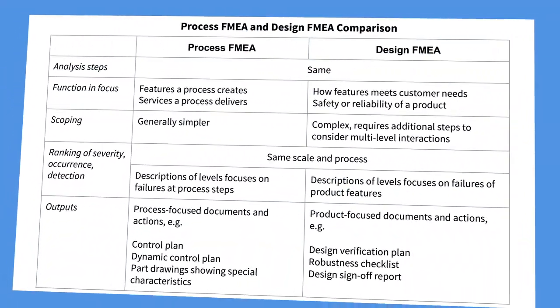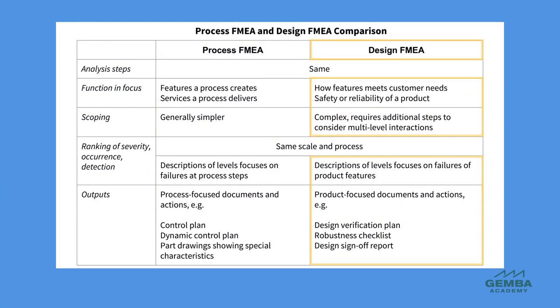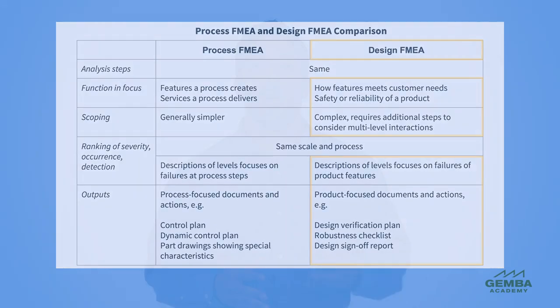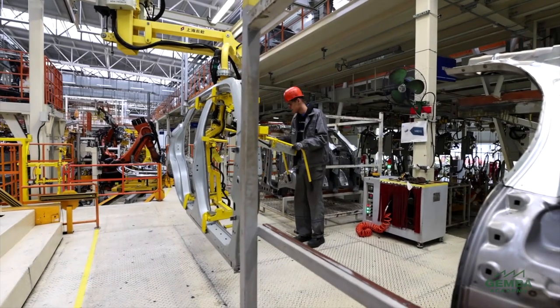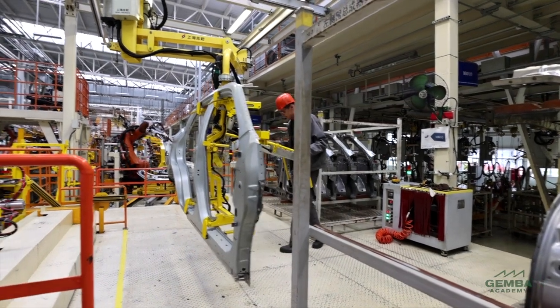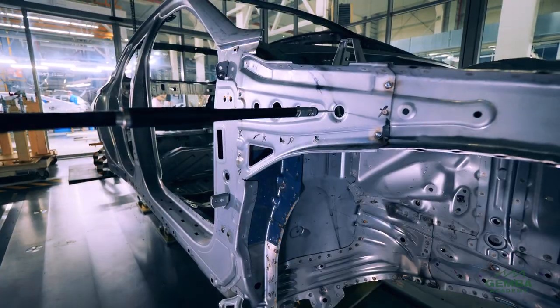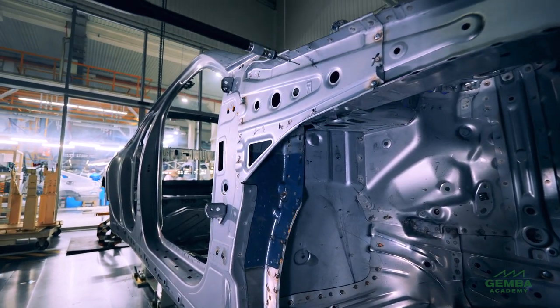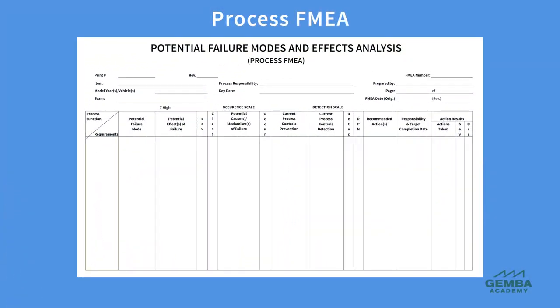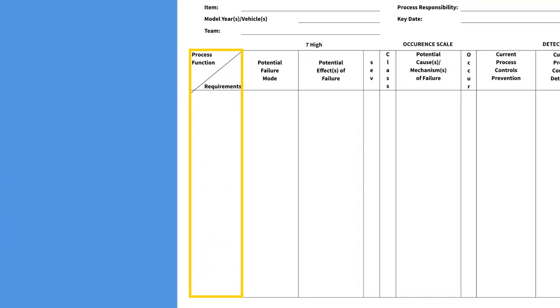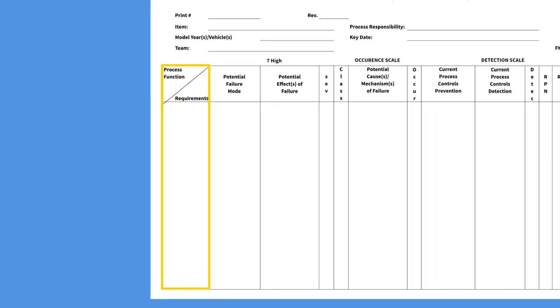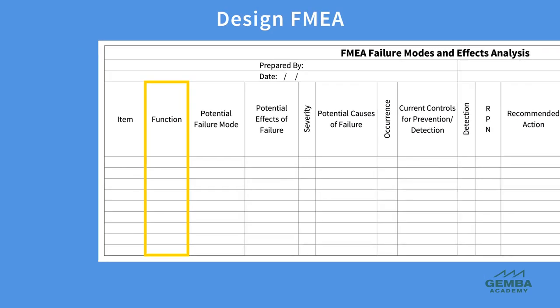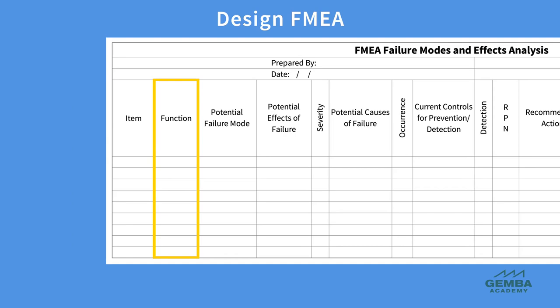However, there are four notable differences between process-focused FMEAs and product-focused or design FMEAs. First, the nature of the function that each type of FMEA studies is different. Process FMEAs examine how a process may fail to produce a desired function. On the other hand, a design FMEA examines risks of a product being unsafe, unreliable, or otherwise unable to meet the customer's needs. For a process FMEA, the function column on the far left of the worksheet will list process steps that create part characteristics or meet the customer's service requirements. For a design FMEA, the function column will list features that customers want from our product or service.